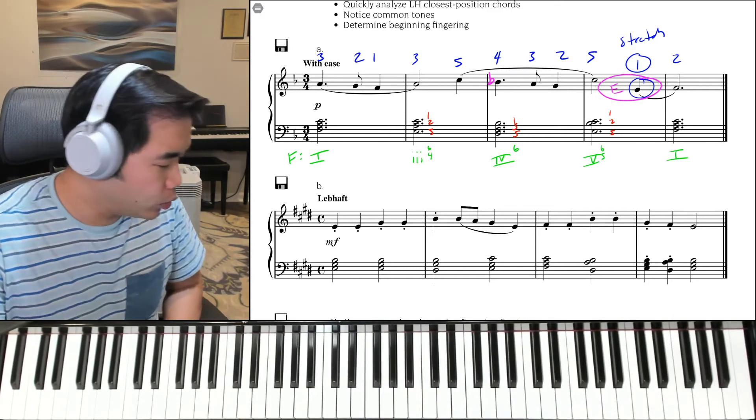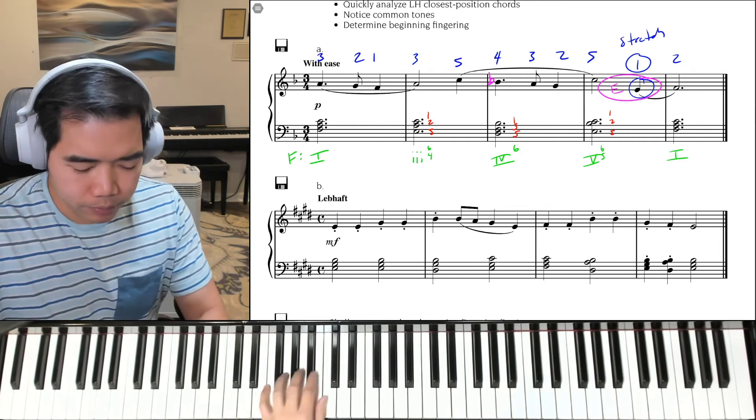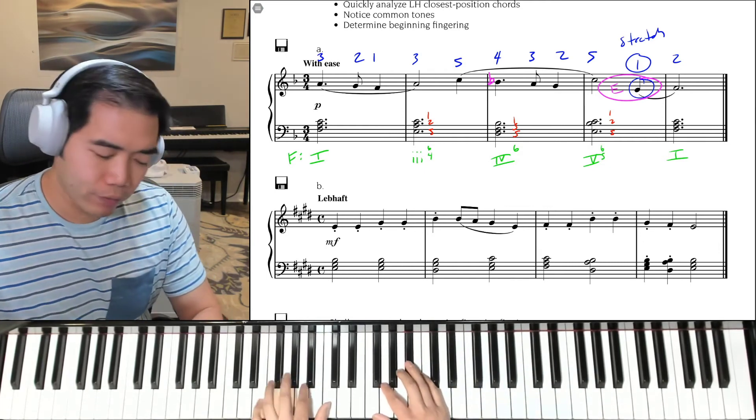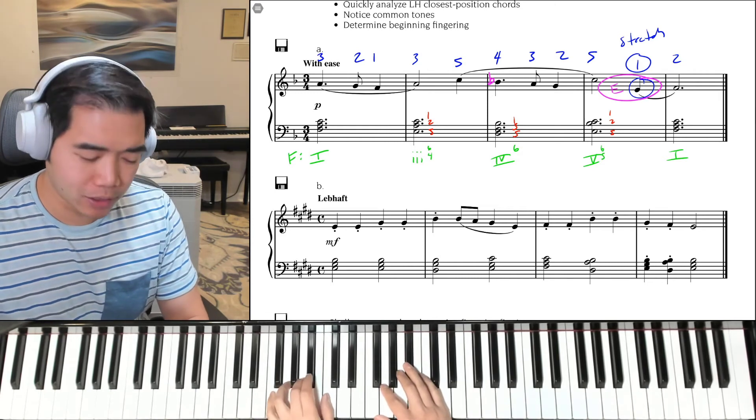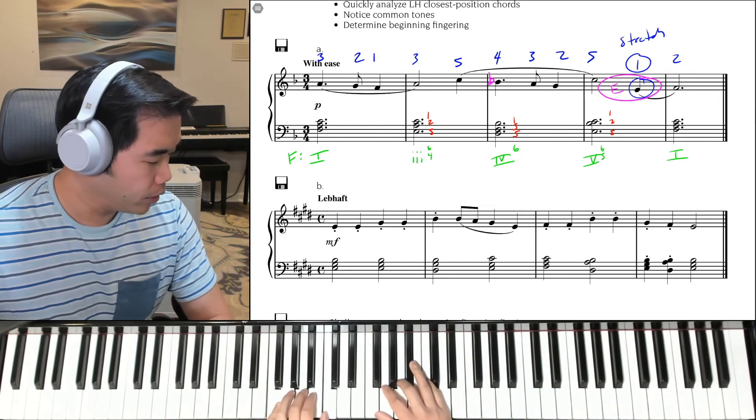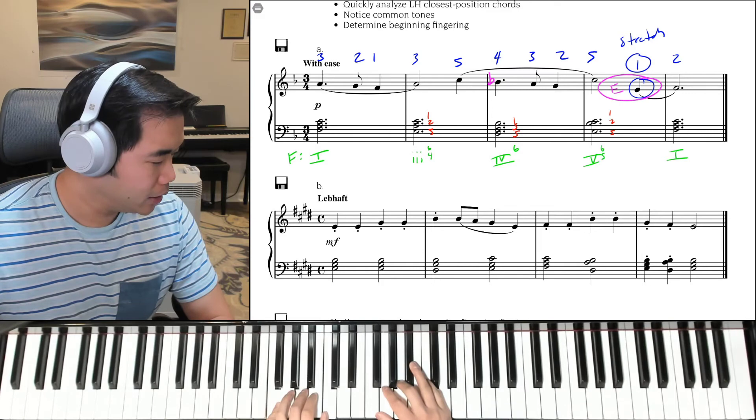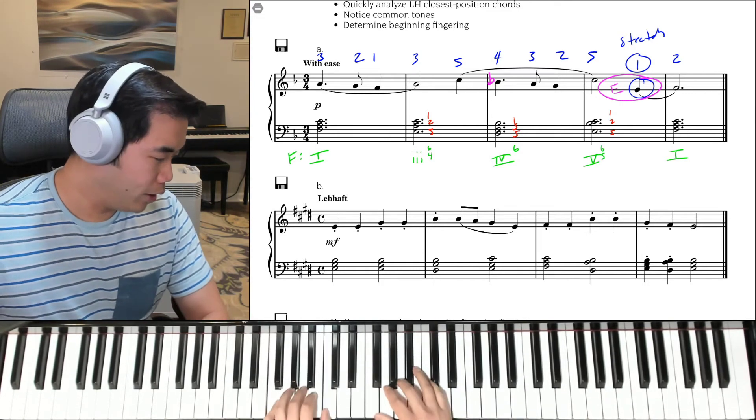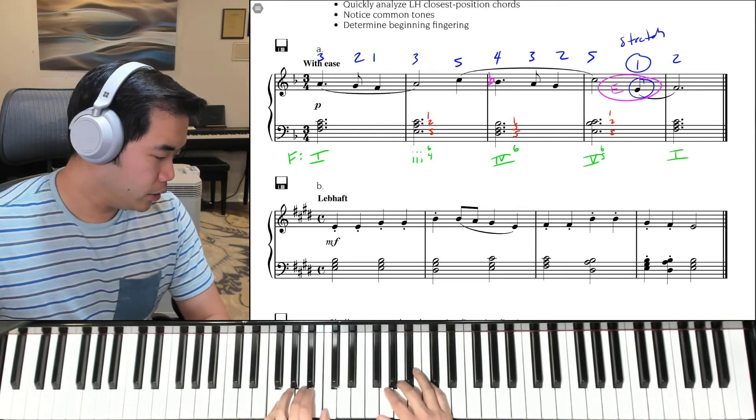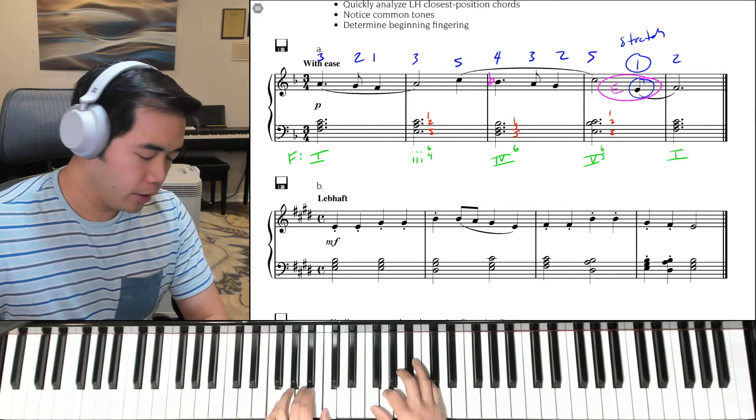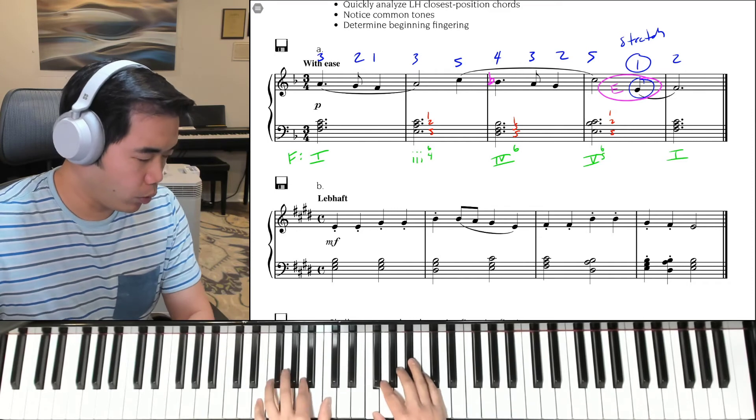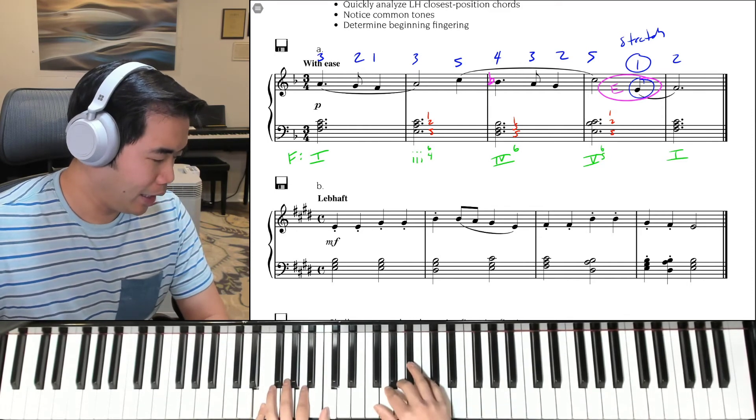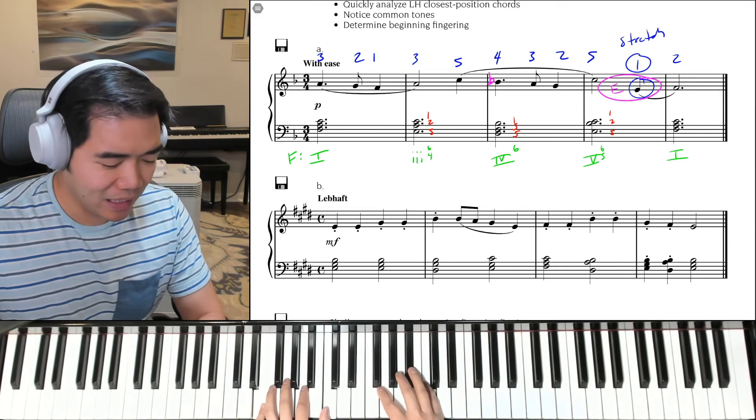When you're comfortable there, we can do it really slowly, hands together. You want to go really slowly and give yourself time to think about the left hand transitions. 1-and-2-and. Here we go. 1-and-2-and-3. Now down to the 3 chord, E, A, C. 2-and-3. Down to D, F, B flat.